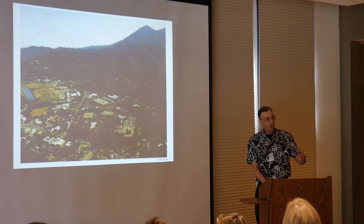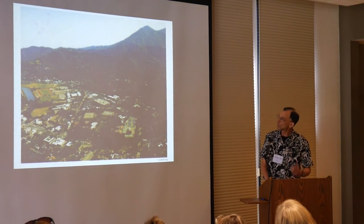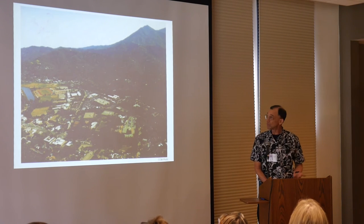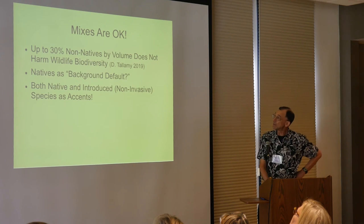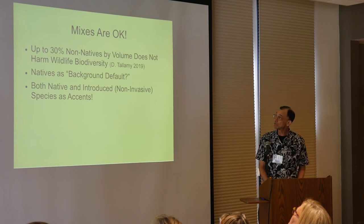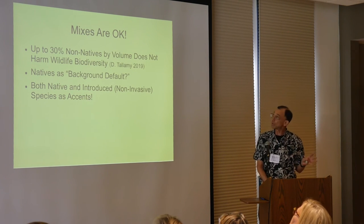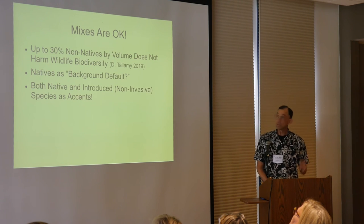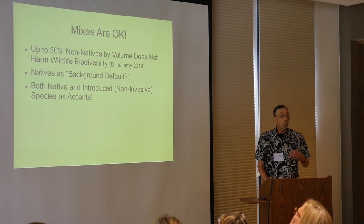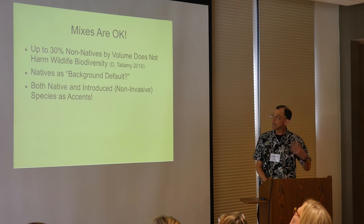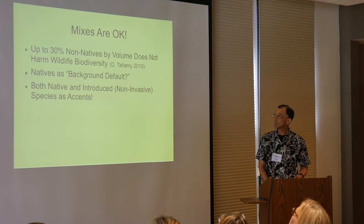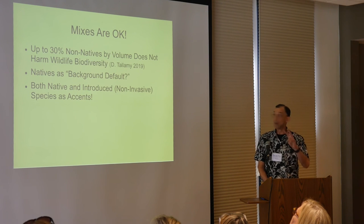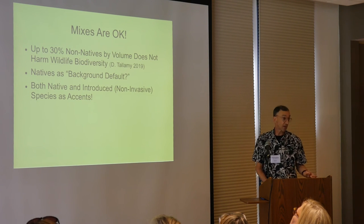When we get to the overall landscape situation — this is the Ross Valley — we have mixtures of things. Doug Tallamy, who works in the eastern United States, did some calculations and found that up to 30% of non-native plants by volume is okay and doesn't impede wildlife biodiversity. So one idea I'm suggesting is that natives be the background default for landscaping, and then both native and introduced non-invasive species can be used as accent plants.